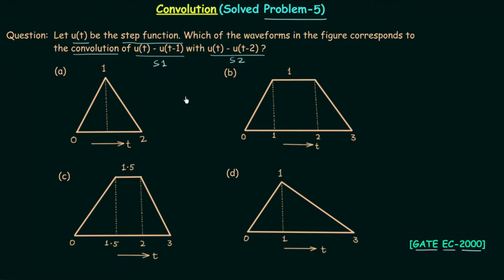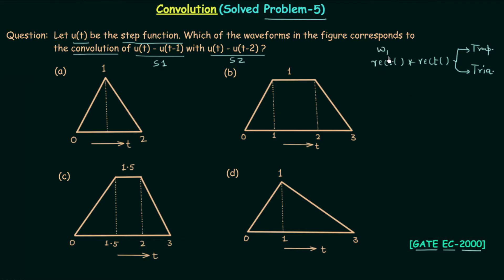You can easily solve this question using the short trick I gave you. The trick is related to the convolution of two rectangular pulses. Whenever you convolute two rectangular pulses, there are two possibilities. If the first rectangular signal has width W1 and the second has width W2, and they are unequal, then you will get a trapezoid.